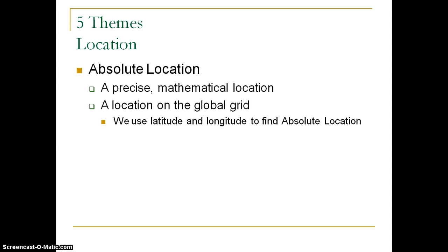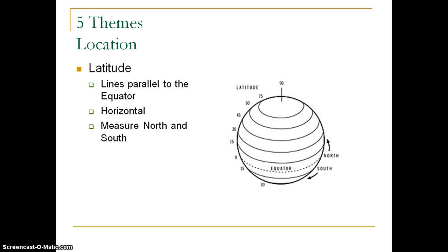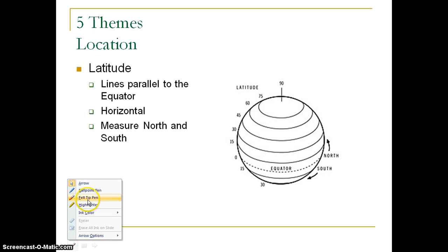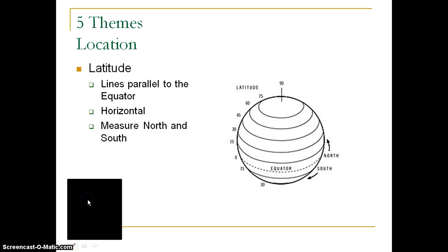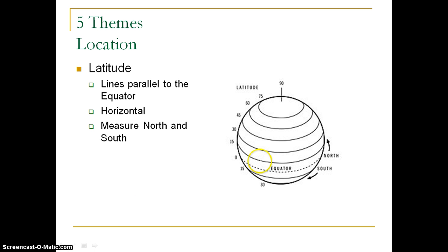When we talk about absolute location, we use lines of latitude and longitude to find the coordinates of a place on the Earth's surface. First we'll start with lines of latitude. Hopefully you've had some experience with this in previous schooling, so this won't be incredibly in-depth.